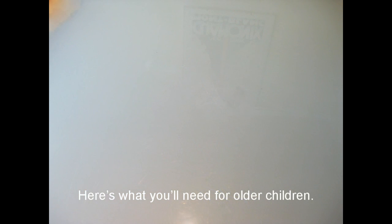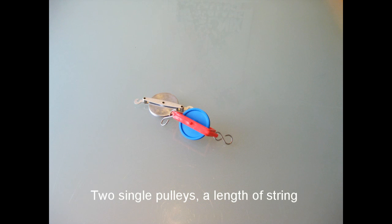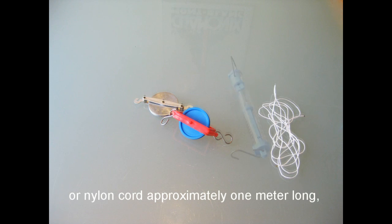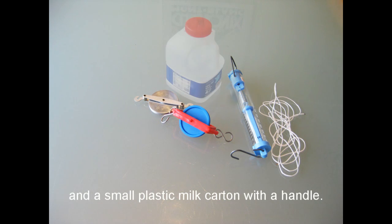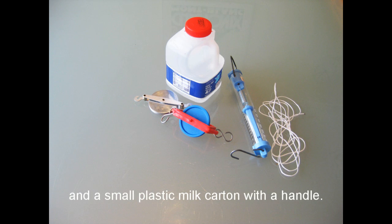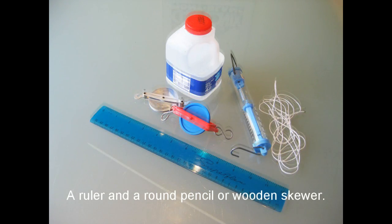Here's what you'll need for older children. Two single pulleys, a length of string or nylon cord approximately one metre long, a force metre which measures up to 250g, and a small plastic milk carton with a handle, a ruler, and a round pencil or wooden skewer.